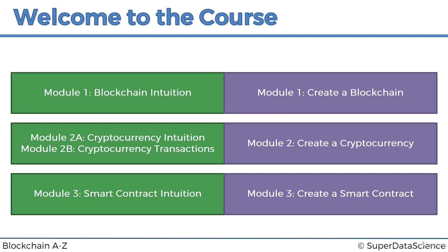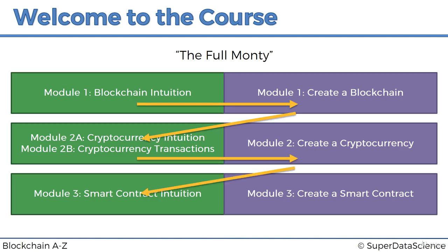Now a couple of comments about how you could go through this course. The first way would be the Full Monty — that is to go through every module. Bear in mind that every module contains multiple tutorials, between 10 and even up to 20 tutorials in every single module. The Full Monty would include going through them one by one: Module 1 intuition, then Module 1 practical, Module 2 intuition, Module 2 practical, Module 3 intuition, Module 3 practical — and that way you will cover absolutely everything. This is of course the most challenging and most thorough approach, but it will take a lot of time and requires doing both the intuition and the coding aspects.